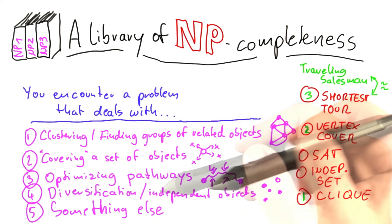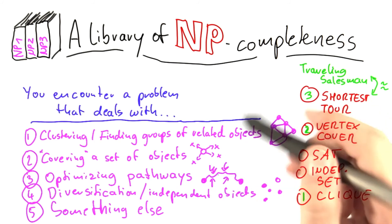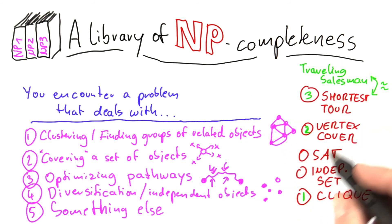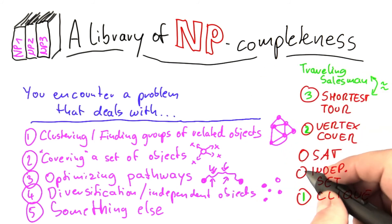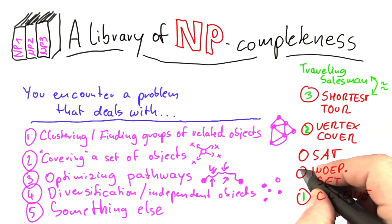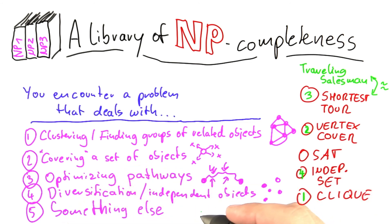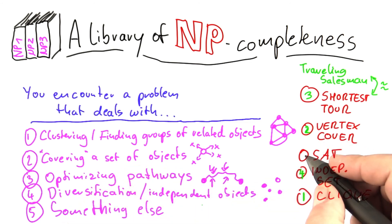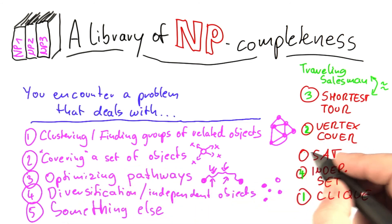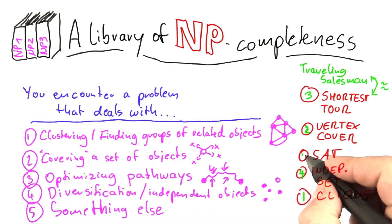Now, diversification — independent objects. If you're a bit test savvy, you would already have guessed: this is, of course, independent set. And then finally, something else — you use our general tool, and that is SAT.